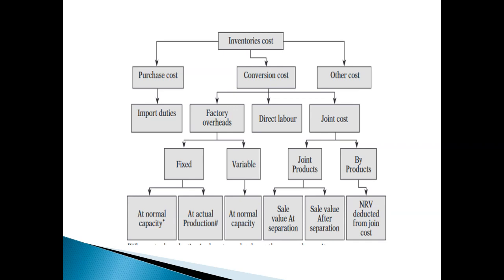For factory overheads, there are two types: fixed and variable (with semi-variable overheads split into fixed and variable portions). Fixed overheads are absorbed at normal capacity — if total normal capacity or less has been utilized, fixed cost at normal capacity is absorbed; if more than normal capacity, the actual amount is absorbed. Variable production overheads are always taken at actuals.